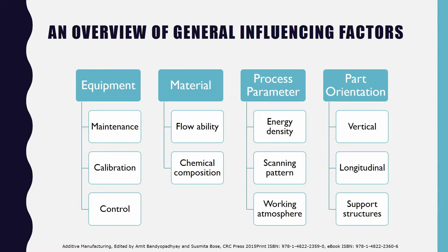With a brief understanding of how the powder bed fusion process works, let me begin with the main bulk of the presentation: an overview of the general influencing factors in powder bed fusion and metallic 3D printing. There are four main categories: equipment, material, process parameters, and part orientation. In the following slides, we will go through each of these.